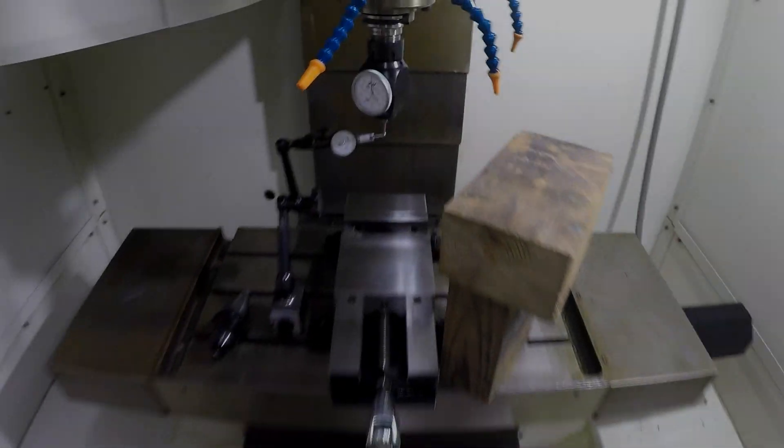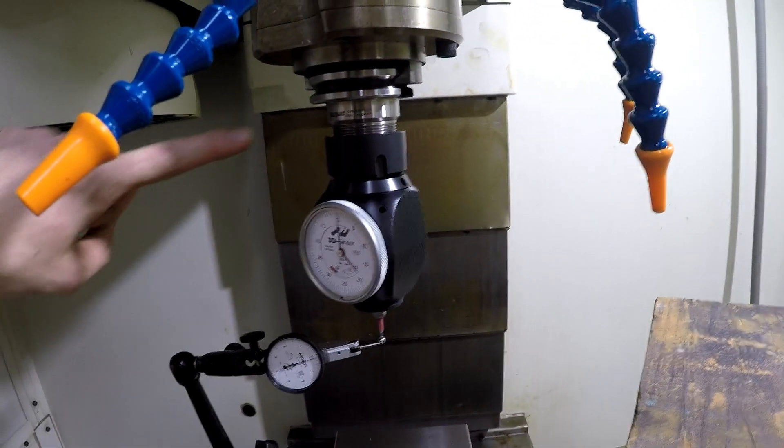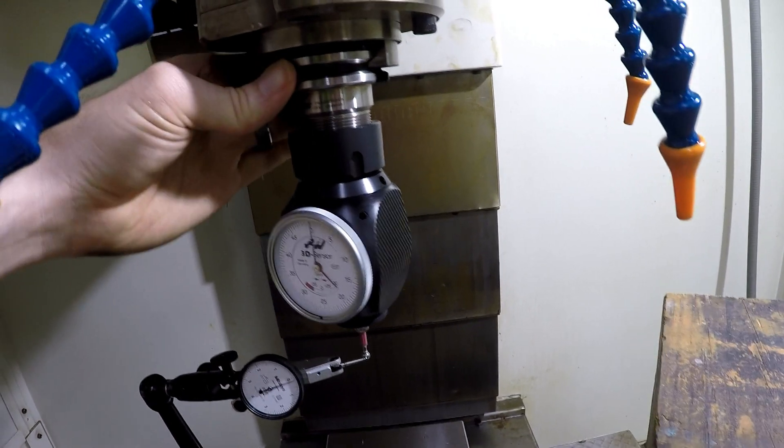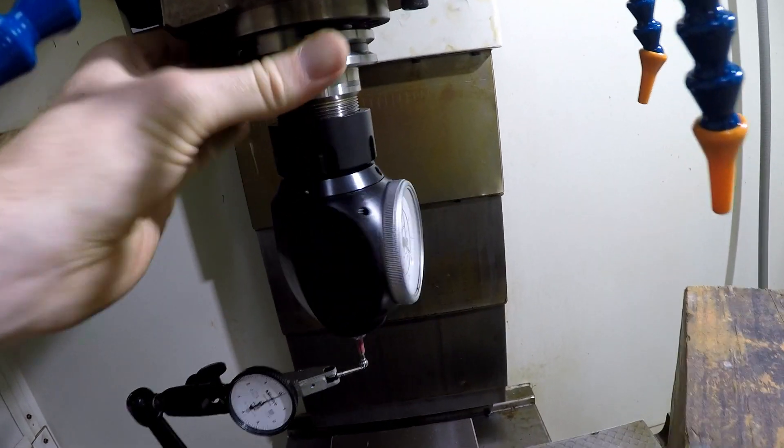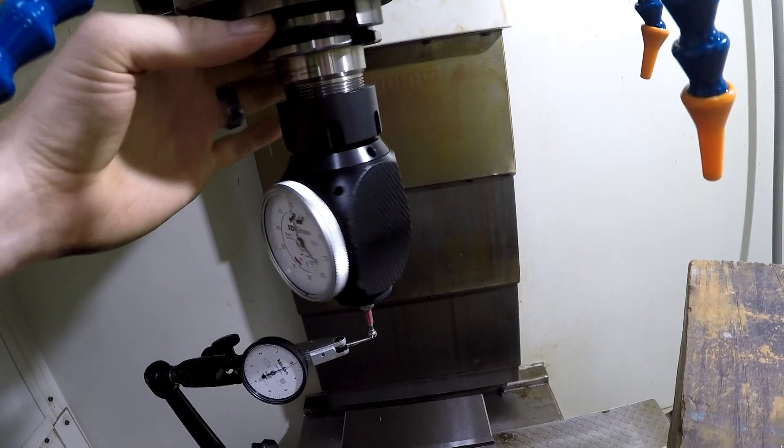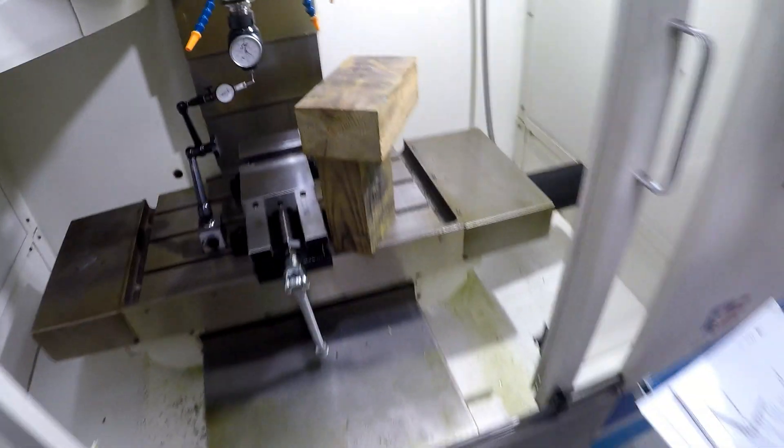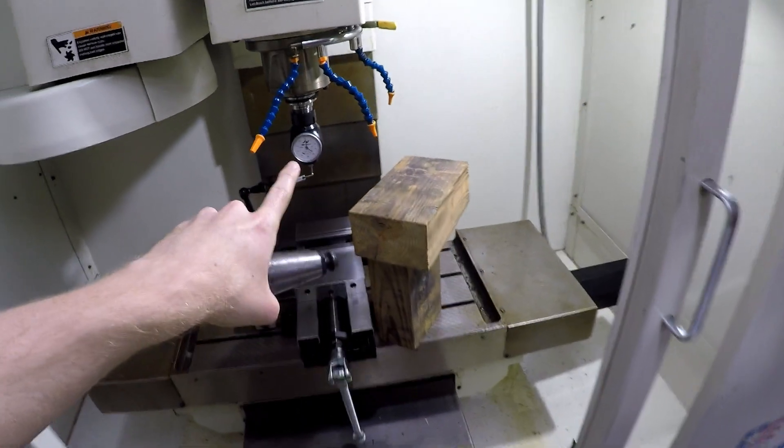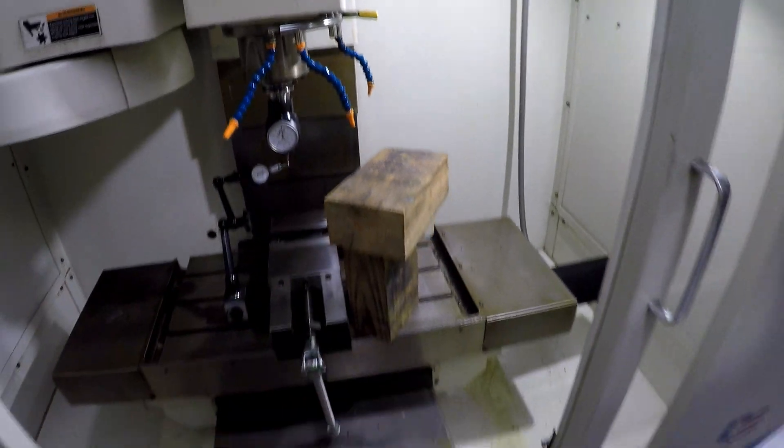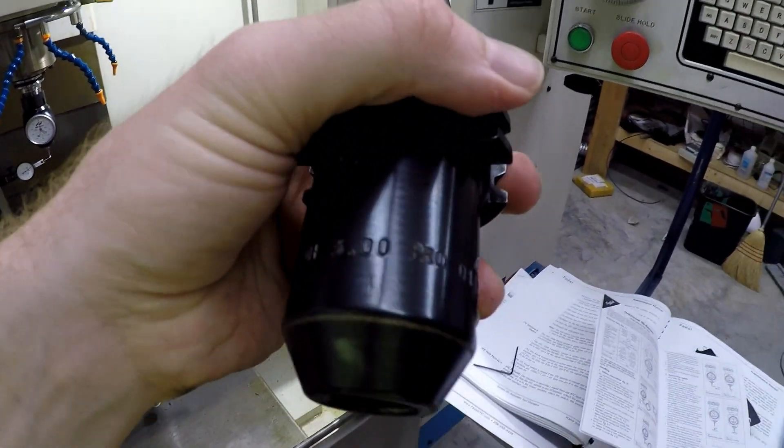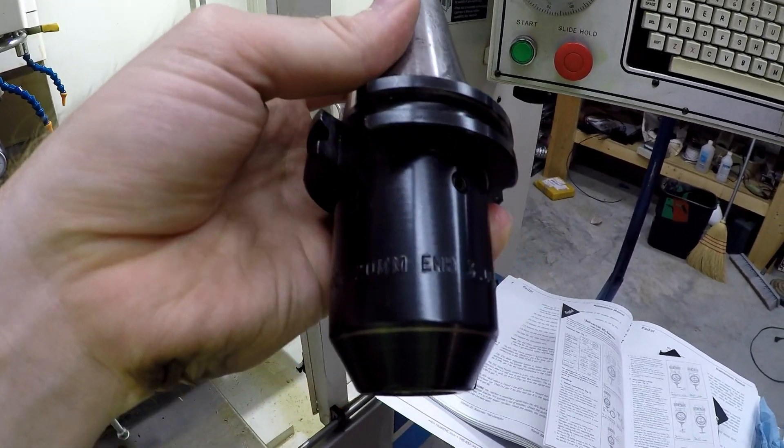All righty, so learn from my mistake. You can see that I got a different holder in here. This is actually an ER32 holder that I got. But for some reason I was thinking that the shaft on the Hymer was 20 millimeters, which is why I got this guy.